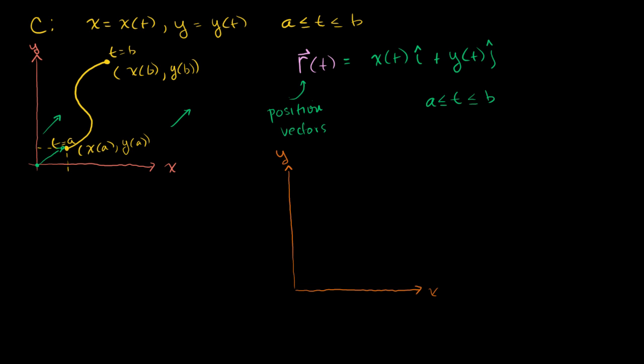So let me do that. So r of a, maybe I'll do it right over here. Our position vector valued function, evaluated at t is equal to a, is going to be equal to x of a times our unit vector in the x direction, plus y of a times our unit vector in the vertical direction, or in the y direction.